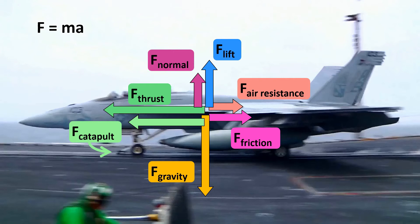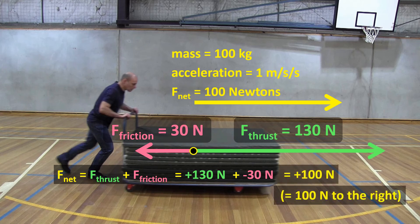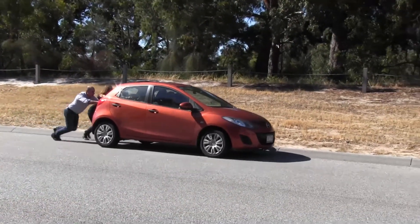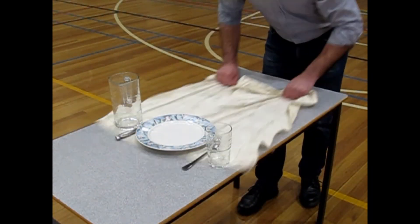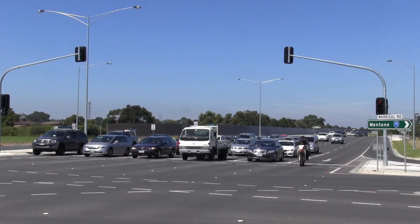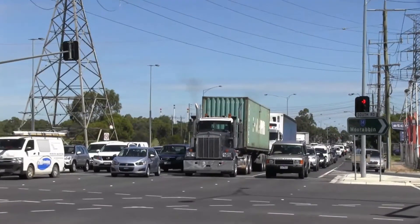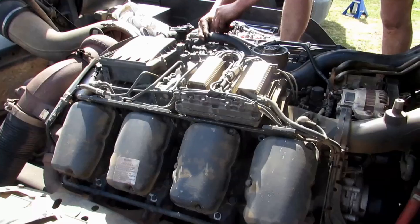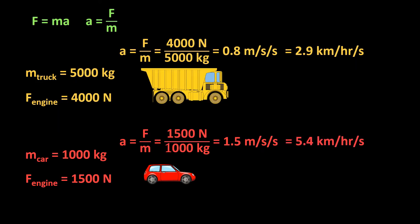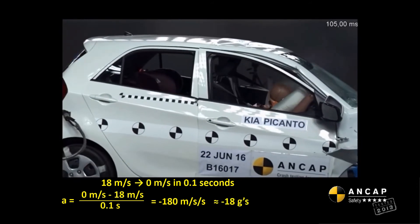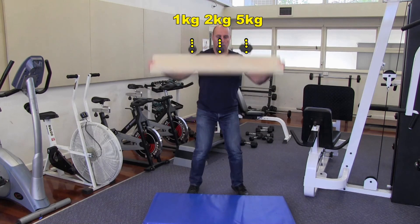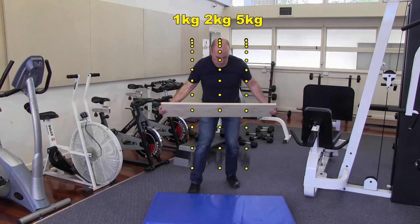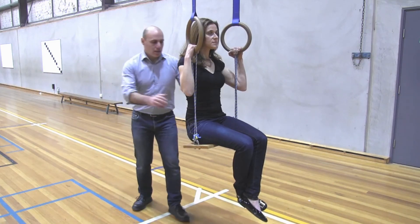In this program on Newton's Second Law, we begin by introducing and explaining the equation F net equals MA. This equation allows us to calculate how much force is required to accelerate any given object by any given amount. We then explain, using the equation, why a dinner set moves with the tablecloth when it's pulled slowly but gets left behind when the tablecloth is pulled quickly. Next, we look at the physics of road transport, explaining why cars can typically accelerate at a higher rate than trucks, even though cars have less powerful engines. We also examine the three main safety features of cars that protect occupants in a head-on collision, and explain why objects in freefall all accelerate at the same rate of 9.8 metres per second per second when air resistance is negligible, finishing with a brief explanation of the difference between mass and weight.